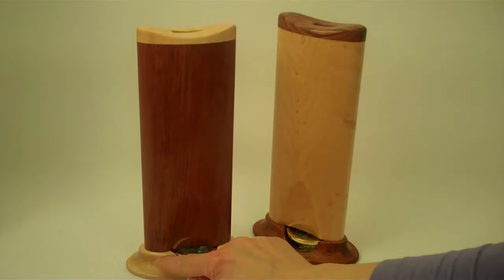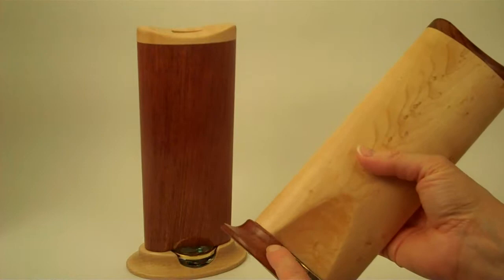Now with the bubinga, Henry adds the maple accents to the object chamber and the eyepiece. And then on the maple version, he uses bubinga for the accent pieces as well.